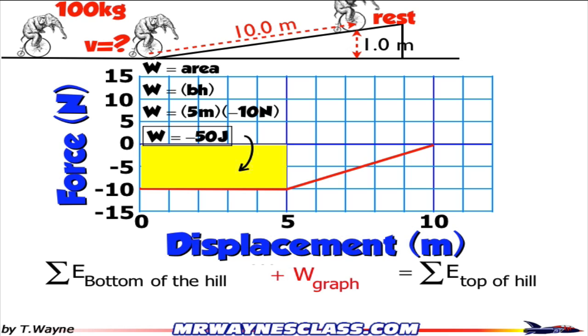And that's 5 times negative 10 is the height. Notice on the graph, it goes down to negative 10. And that process gives me negative 50 joules. So I know that that area represents negative 50 joules of work. So it's something that's slowing them down, removing energy.